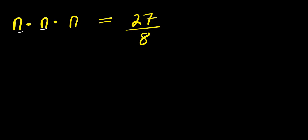We have n times n times n equals 27 divided by 8. We are solving for all values of n that satisfy this equation. Multiplying the left-hand side, n times n times n equals n to the power of 3.